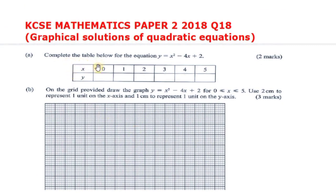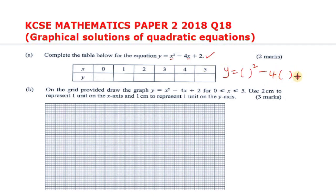We are required to complete the table by substituting the values of x into the equation to get the values of y. We may rewrite the equation as y = (x)² - 4(x) + 2. The trick is to copy the right-hand side into your calculator and substitute the values of x in turn. For example, if x = 0: 0² - 4×0 + 2 = 2.